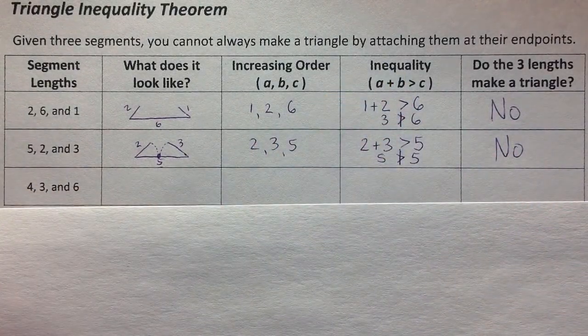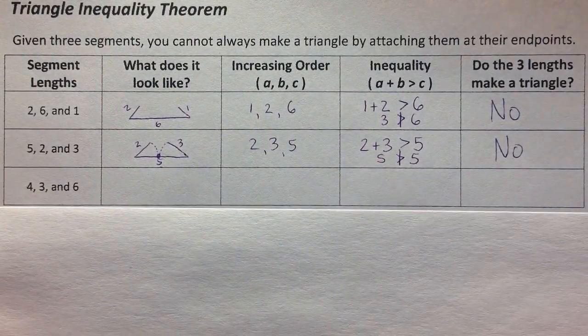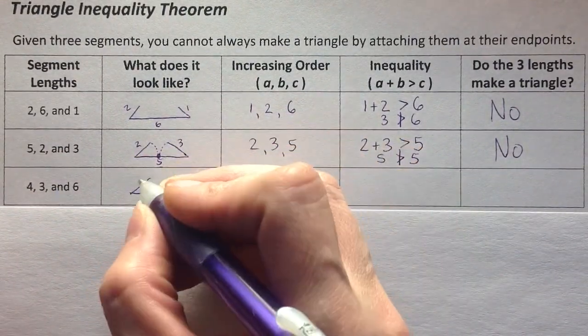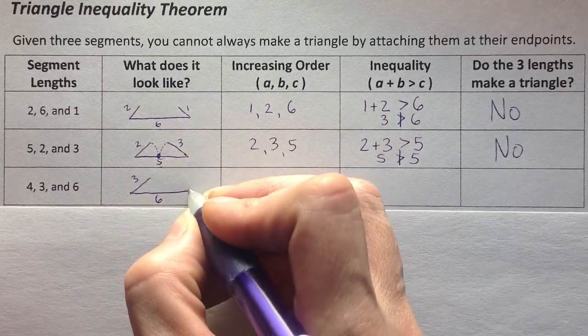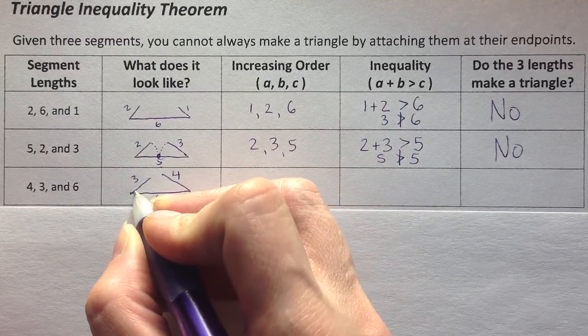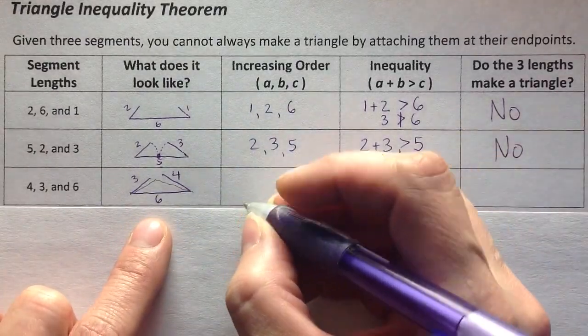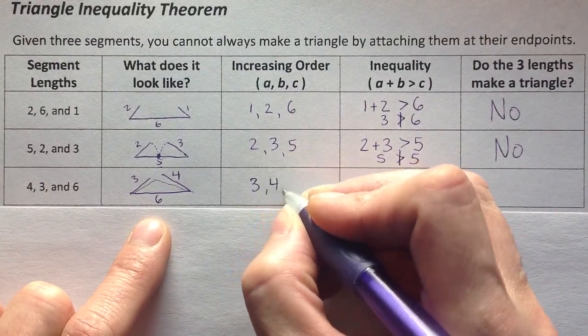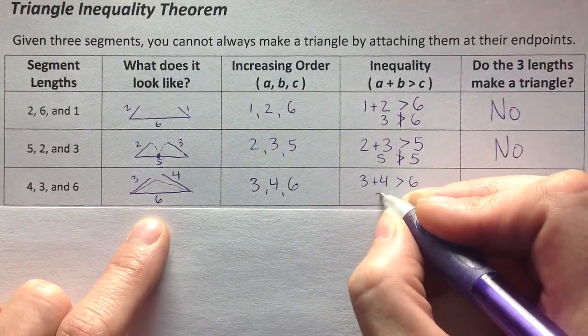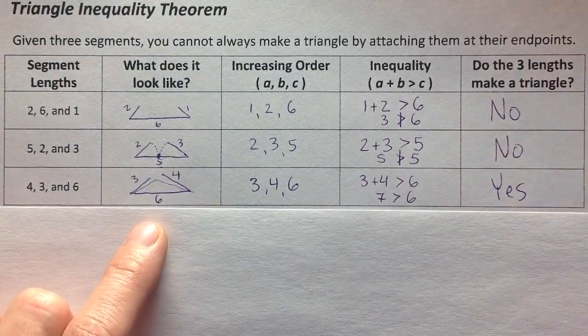So again, visualizing it in your head or on a piece of paper, I actually am just picturing it in my head. Laying the longest one down, attaching the two shorter pieces, and asking if it's going to make a triangle. 4 and 3, they're going to be able to meet to make a triangle because they add up to 7. So put them in order. 3, 4, 6. Add the two shorter ones, and that was going to have enough space to create a triangle. Yes, it will make a triangle.